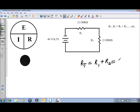So we have R1 at 12 ohms plus R2 at 12 ohms for our total opposition to current flow, or our total resistance in this circuit of 24 ohms.